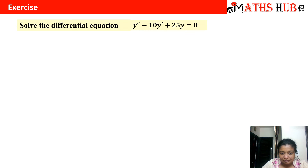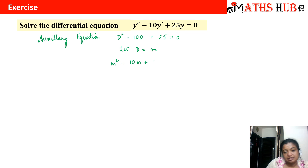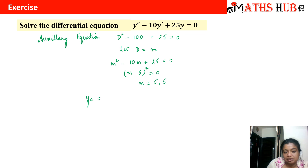Exercise 2: Solve y″ − 10y′ + 25y = 0. The auxiliary equation is m² − 10m + 25 = 0, which factors as (m − 5)² = 0. We get two equal roots: m₁ = m₂ = 5. For real and equal roots the complementary solution is y_c = c₁e^(5x) + c₂xe^(5x).